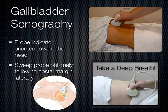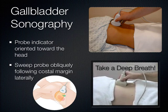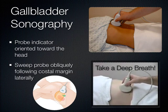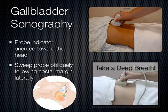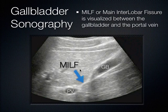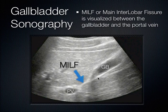The right and left lobes of the liver come together, and whenever two things come together on ultrasound you see a hyperechoic line. Where the right and left lobes come together is called the main interlobar fissure — it's the fossa the gallbladder sits in. The main interlobar fissure runs between the portal vein and the neck of the gallbladder. About 75% of patients have a very prominent main interlobar fissure connecting the portal vein to the neck of the gallbladder — use that to identify which anechoic structure is the gallbladder.